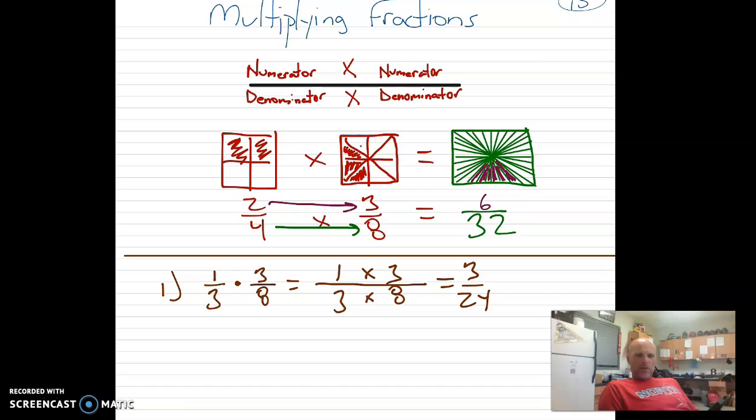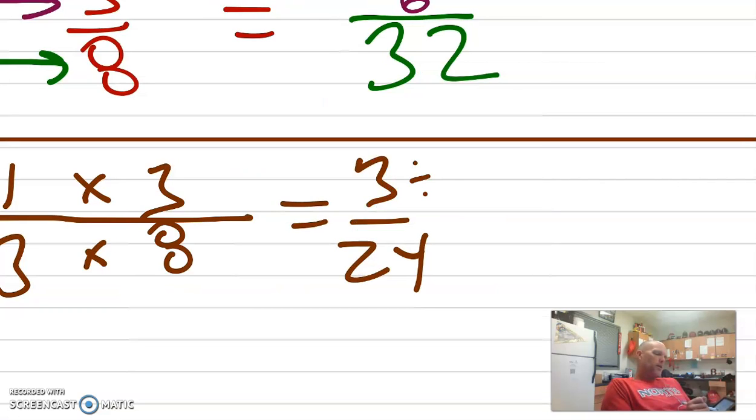Okay? So we've got to think, can we simplify that? So does 3 and 24 have something in common? Do they have a multiple in common? So if you skip count by 3s, will you get to 24? You actually will. So to simplify, you're going to just divide by the same thing. 3 divided by 3 is 1, and 24 divided by 3 is 8. Okay, so your final answer is 1 eighth.